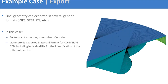When the model is ready, we export the geometry for grid generation into Converge CFD. The final geometry can be exported in generic CAD formats like IGES, STEP, and STL. In this case specifically, we export the geometry as a sector cut out according to the number of injector nozzles, in Converge CFD's special surface.dat format. We also include individual IDs for identification of the different geometry patches — such as the cylinder head, the bowl, and the periodic surfaces. That's it for the model setup, and now back to Sarang to explain the rest of the optimization workflow.